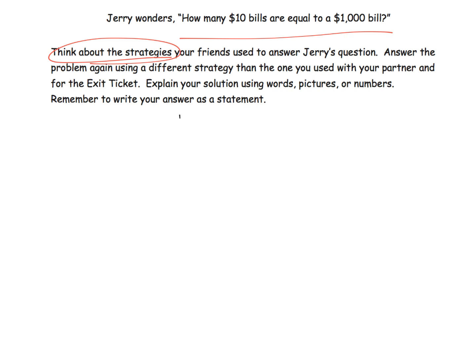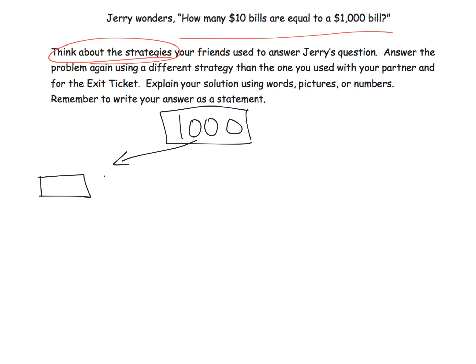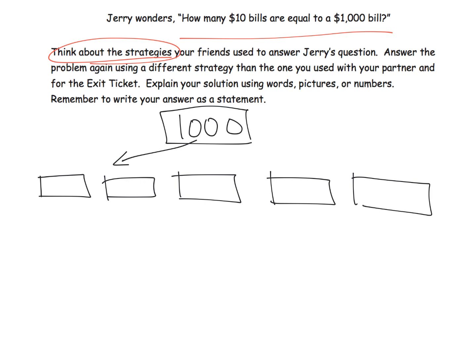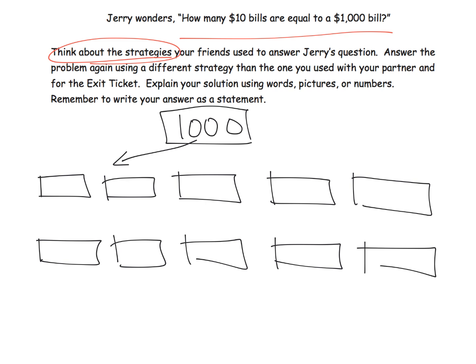So one idea might be: I'm going to start with $1,000 — I'm just going to give you one idea for what that might look like. Well, how many hundreds does it take to make $1,000? It takes 1, 2, 3, 4, 5, 6, 7, 8, 9, 10. So here's a $100 bill.